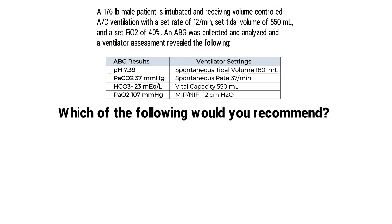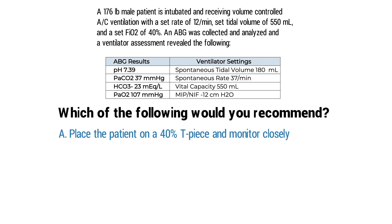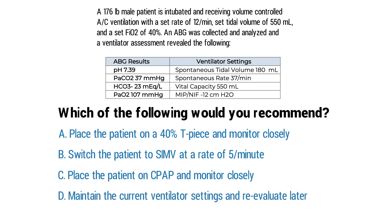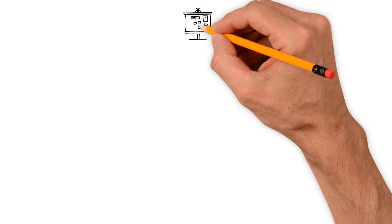Which of the following would you recommend: A) place the patient on a 40% T-piece and monitor closely, B) switch the patient to SIMV at a rate of 5 breaths per minute, C) place the patient on CPAP and monitor closely, or D) maintain the current ventilator settings and reevaluate later?